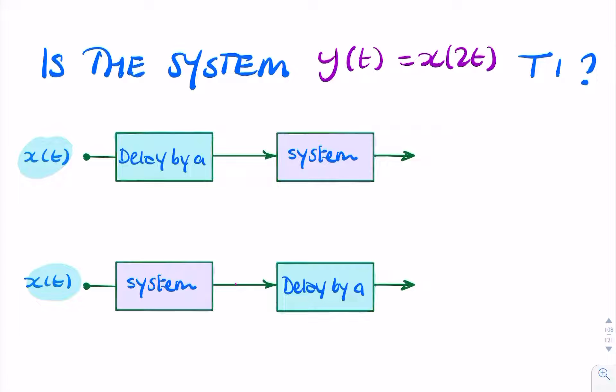So let's try that for x of 2t. If x of 2t goes into our delay block, so it's delayed by a seconds, the output of that will simply be x of t minus a.